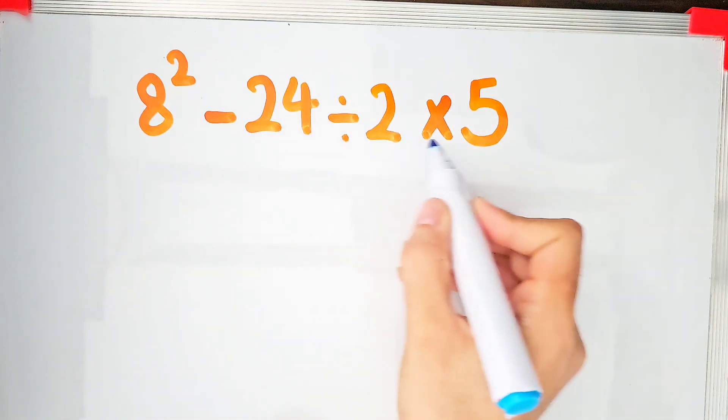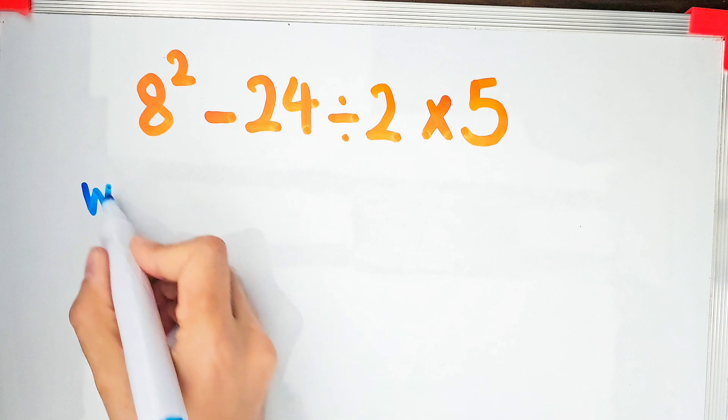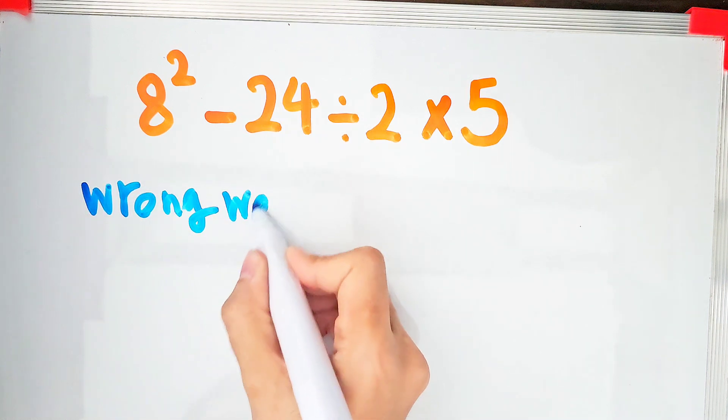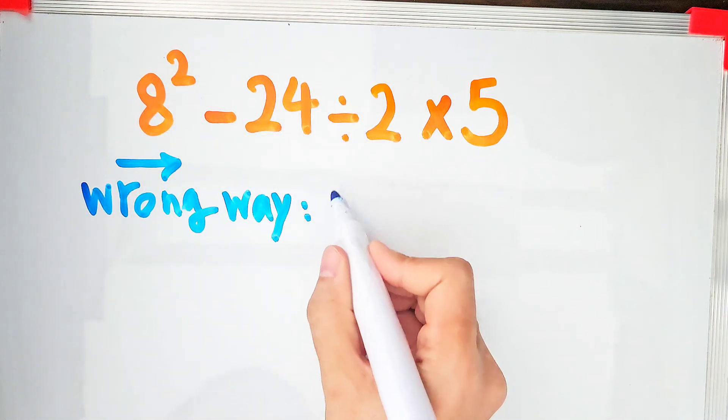Can you solve this question? Hi and welcome to Turbo Math channel. In the wrong way of solving this question, some people don't pay attention to the priority of the mathematical operations and they start simplifying from the left to right.